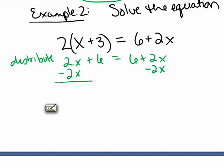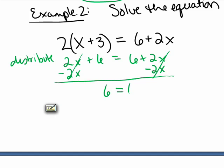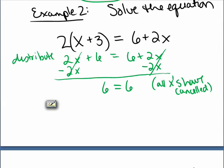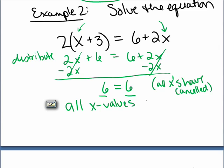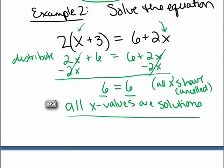If you didn't observe that, go ahead and keep going. I subtract 2x on both sides, and the x's cancel on both sides, leaving 6 equals 6. All the x's have canceled. We ask ourselves: when is it true that 6 equals 6? For any x value — no matter what x you plug in, it will still be true. So all x values are solutions. The original equation is an identity: the left is the factored form and the right is the expanded form, and they are always equal.